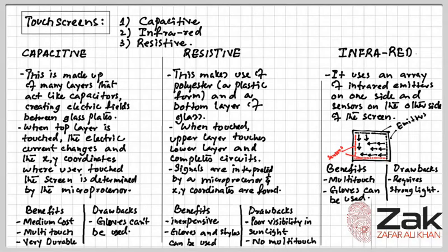This lecture is about touch screens, so let's first discuss about screens. Screens are used to show the output from the computer. Modern screens use an LCD backlit with LEDs or newer organic light emitting diode, or OLED technology.